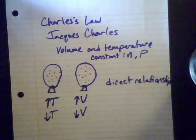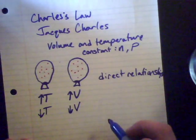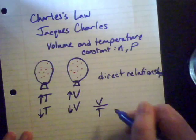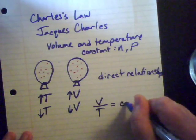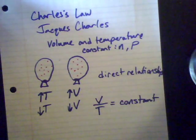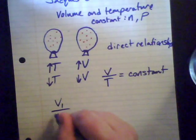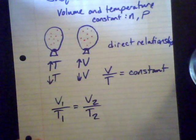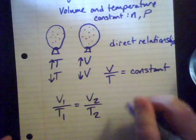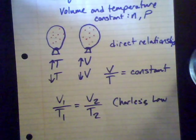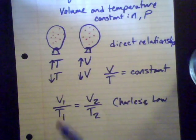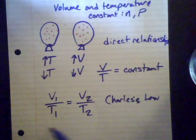If volume and temperature are directly proportional, then the ratio of volume to temperature is always a constant. So we can set the initial ratio equal to the final ratio. Charles' Law is written as V1/T1 = V2/T2. You could also write it as T1/V1 = T2/V2 — that's totally fine, it'll still work when you rearrange it.